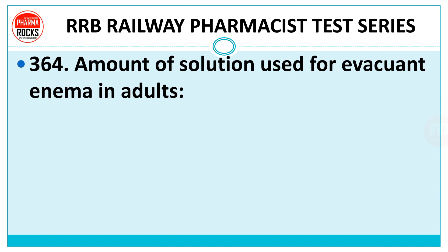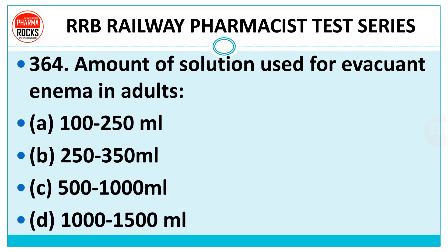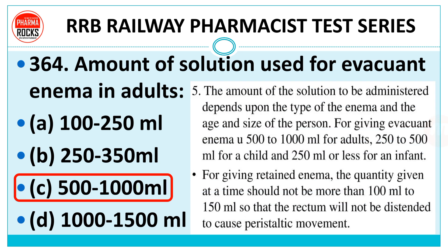Question 364: Amount of solution used for evacuant enema in adults. Option A: 100–250 ml. Option B: 250–350 ml. Option C: 500–1000 ml. Option D: 1000–1500 ml. Right answer is Option C, 500–1000 ml. For a child it is 250–500 ml, and for an infant it is 250 ml or less. Yeh tino values yaad rakhna hai.